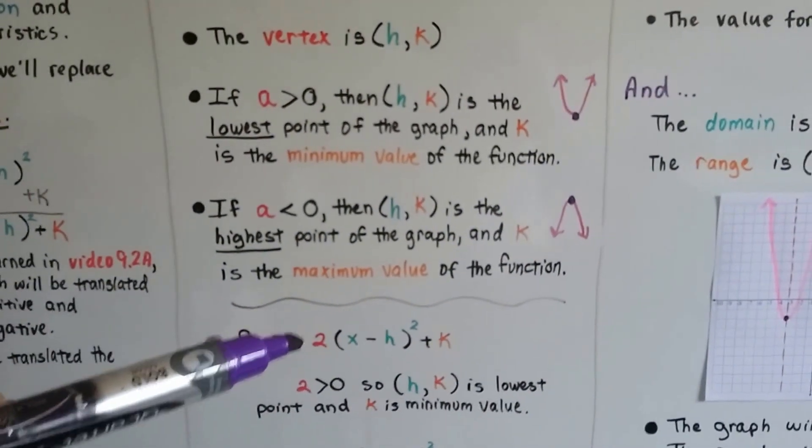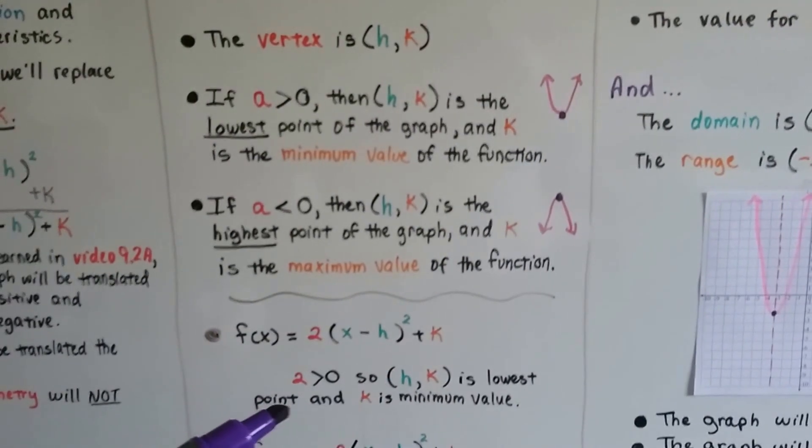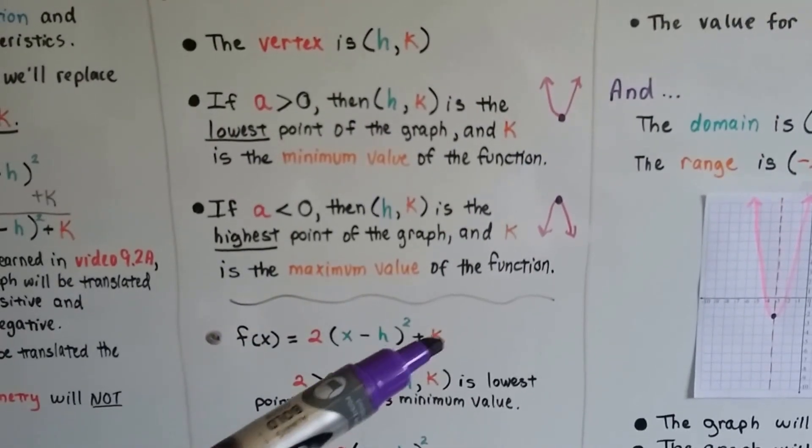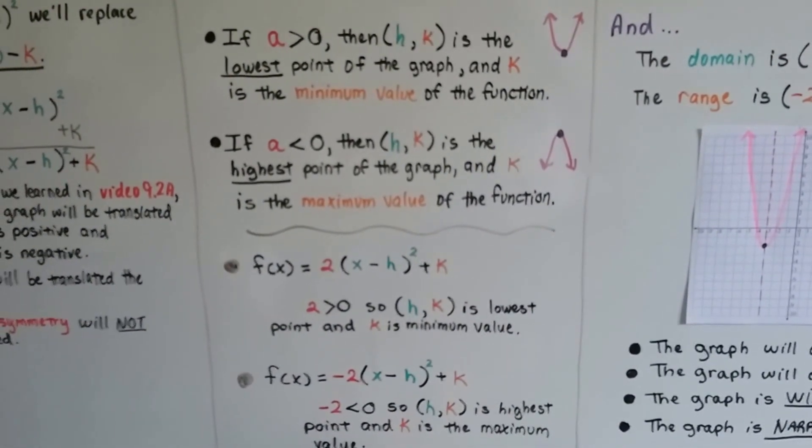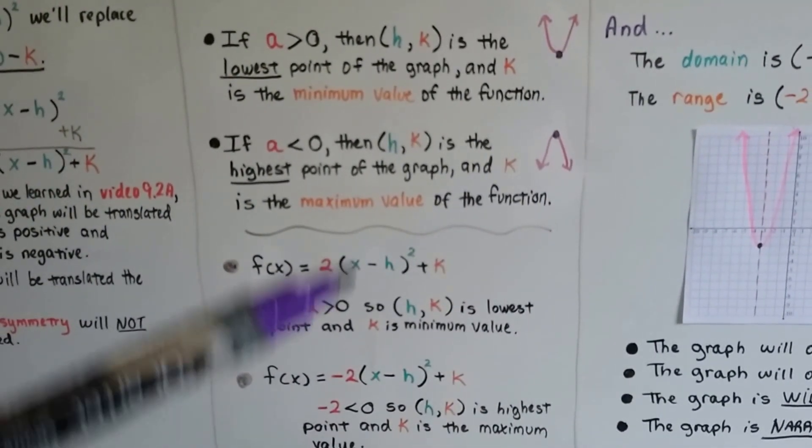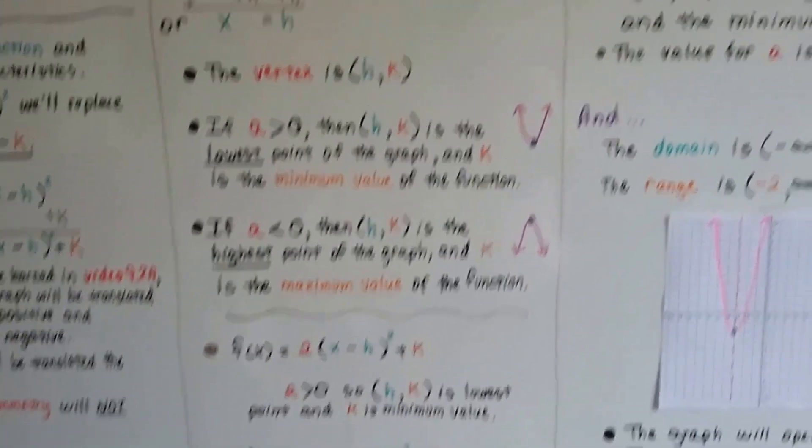So, if we have a two here, that's greater than zero, so that's the lowest point, and k is the minimum value. If we have a negative two, that's less than zero, so that's the highest point, and k is the maximum value.